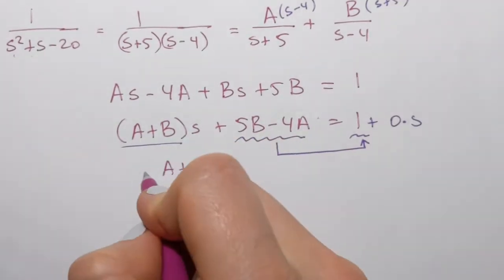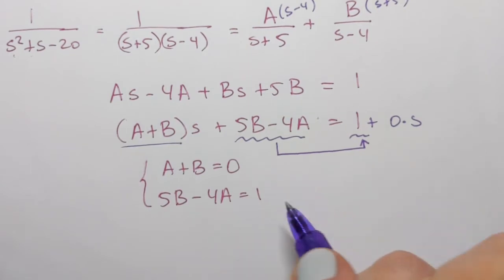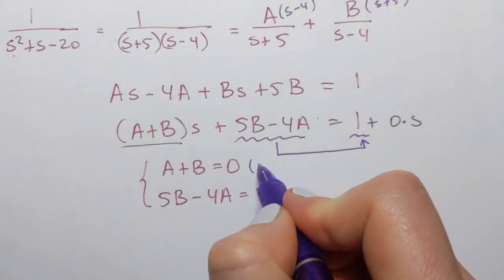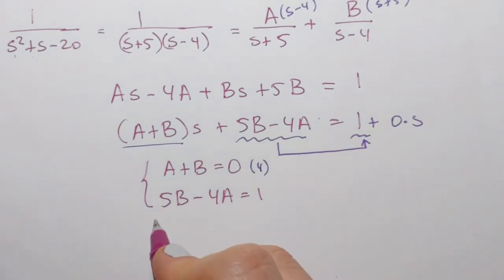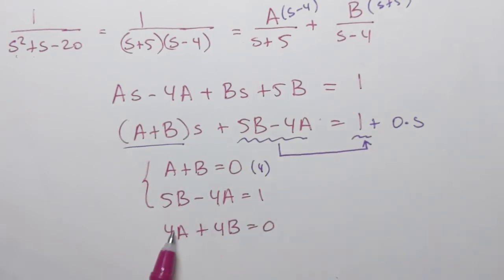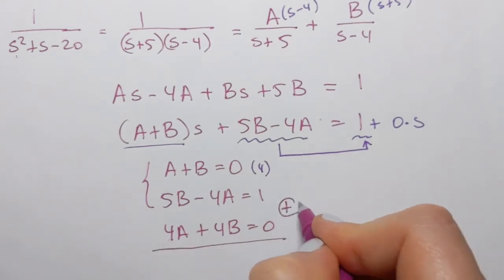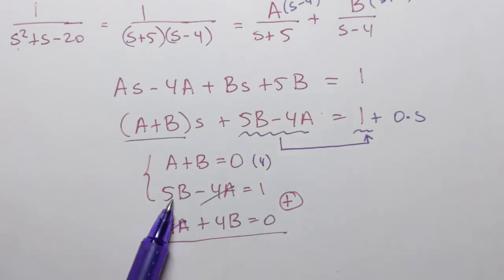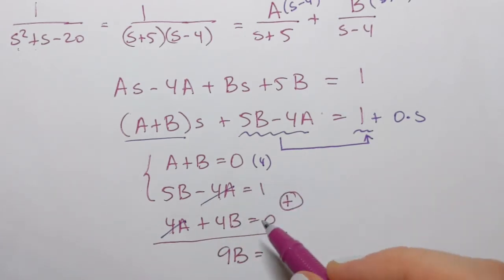Now to solve this system, I will multiply the first equation by 4. So I'll have 4a plus 4b equals 0. I'm doing that so I can cancel out a's. As I add two equations together, negative 4a and positive 4a will cancel. 5b plus 4b equals 9b, and 0 plus 1 is 1.